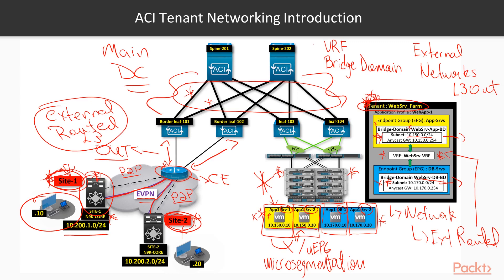To recap: VRFs contain all bridge domain network information — they are essentially the route table for a tenant. External networks are also attached to the VRF, allowing bridge domains to learn about and communicate with those networks. Everything happens through contracts attached to endpoint groups and external domains. In our next video, we'll go deep into configuration — let's get started.